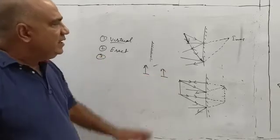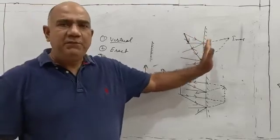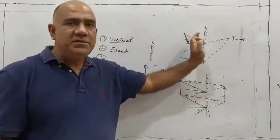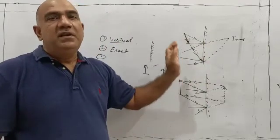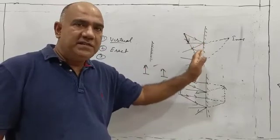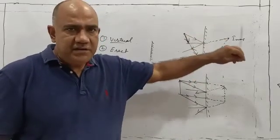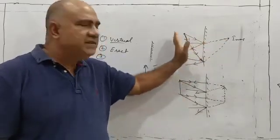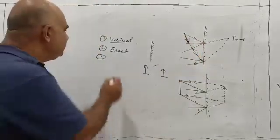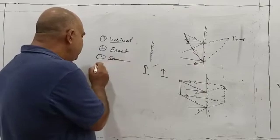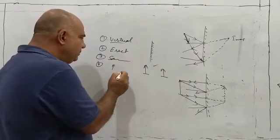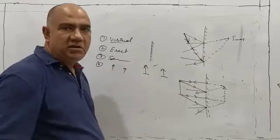The third characteristic is that the image is formed exactly the same distance behind the mirror as the object is placed in front of it. In the case of a plane mirror, image distance equals object distance — we refer to this as same distance. Additionally, the height of the image is the same as the height of the object.